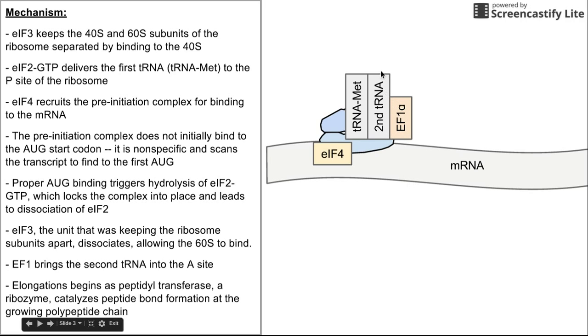A ribozyme called peptidyl transferase creates peptide bonds between the two tRNAs, forming a growing polypeptide chain. This step is repeated as elongation factors continue to bring subsequent tRNAs to continue growing the polypeptide chain.